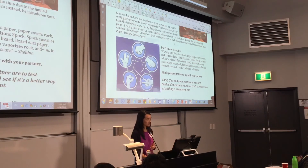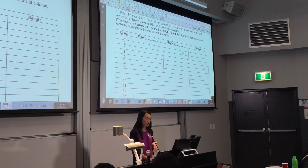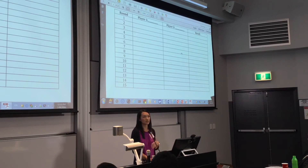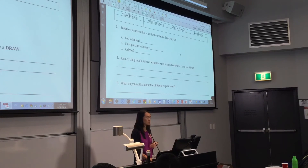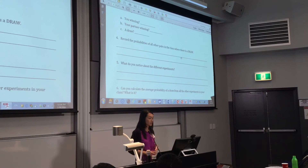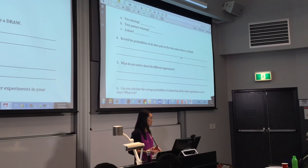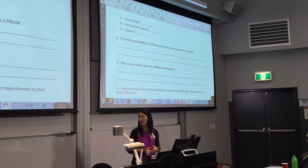Students get into pairs and they play 15 rounds of Rock Paper Scissors Lizard Spock with their partner. They record all their results and they're trying to see how many times they draw. Once they've done that, they summarise their results, work out relative frequency, and record all the probabilities from other pairs in the class. Then you can have a conversation about the differences and similarities, and they conclude whether the game is a better version for settling disagreements.